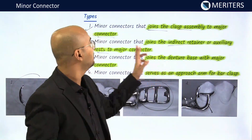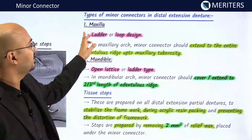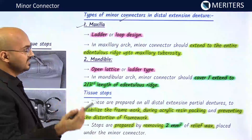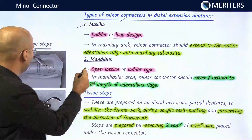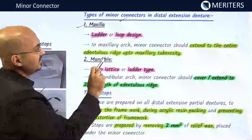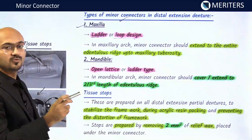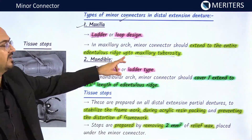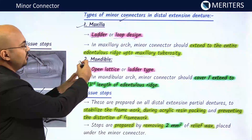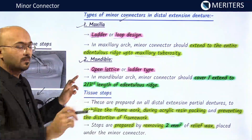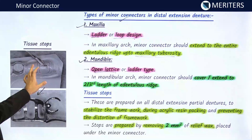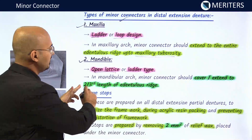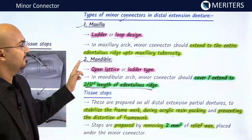For distal extension cast partial denture bases: in a maxillary cast partial denture, a ladder or loop type of design is chosen, with struts along the ridge. In the maxillary arch, the minor connector should extend along the entire edentulous ridge up to the maxillary tuberosity — but not on the tuberosity. In the mandible, an open lattice or ladder type is used, and the minor connector should extend to two-thirds the length of the edentulous ridge.